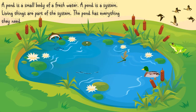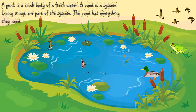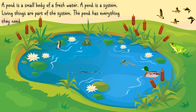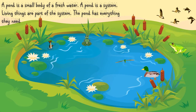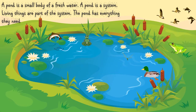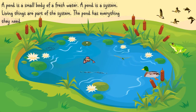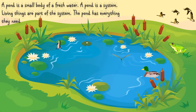Let's name the different plants and animals which we see in this pond here. We see fish, a duck, frogs, and a dragonfly flying above this pond. We can also see some nice flowers. The flower floating on the surface of the pond is called a water lily. The nice flowers on the sides of the pond are called cattails. All of these animals and plants live in a pond, which has everything they need to live and grow.